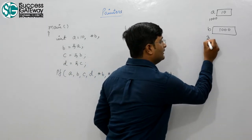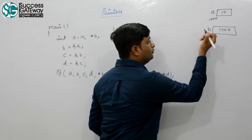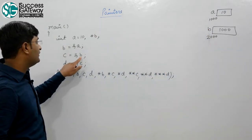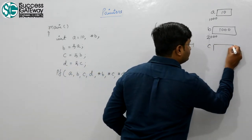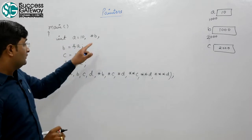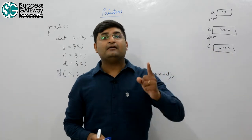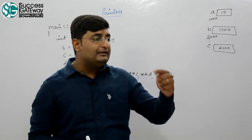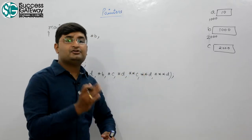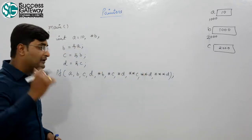Let the address of b be 2000. c is equal to address of b, so c is holding 2000. Now, 2000 is not the address of an integer directly — it is the address of an integer pointer. So the declaration of c should be pointer to pointer to integer.